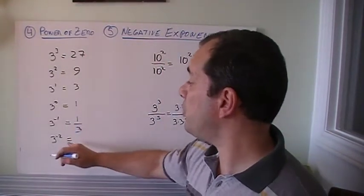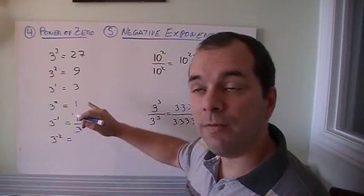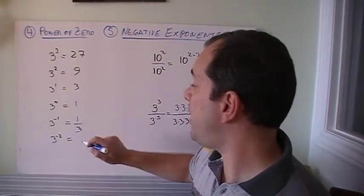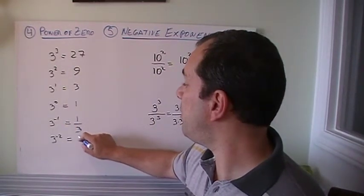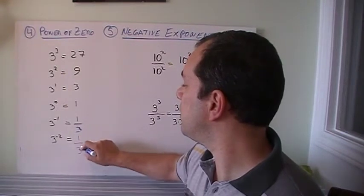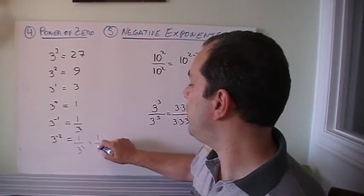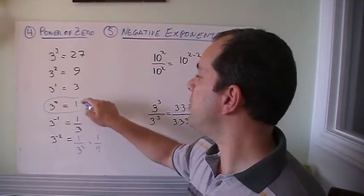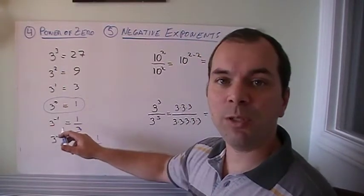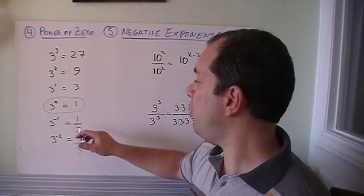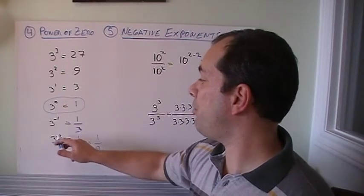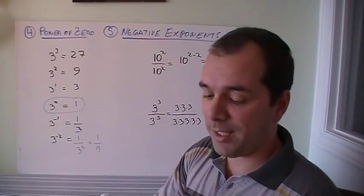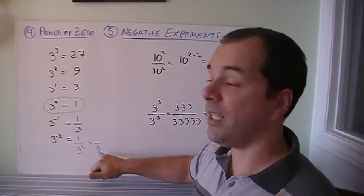Now if I do 1 over 3 one more time to do 3 to the negative 2, if I divide that by 3, it's like saying 1 third times 1 third, which means I will have 3 to the power of 2, or 1 over 9. So as you can see, 3 to the power of 0 gave me 1. And when I started going to negative exponents, it's like saying 3 to the 1 but on this power over here. 3 to the negative 2, it was like 1 over 3 squared, and that gives me 1 over 9.